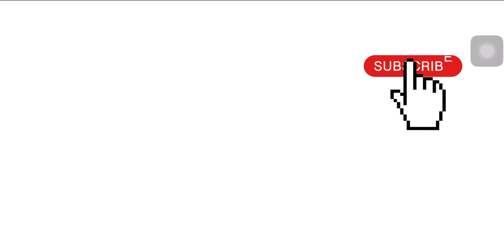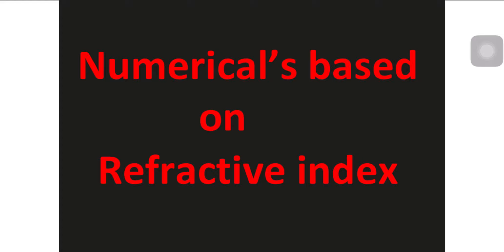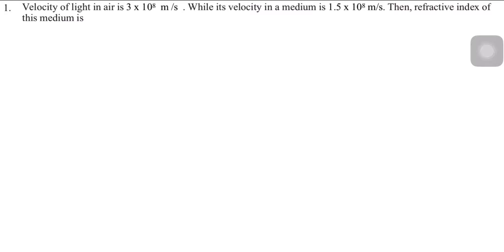Welcome to today's lecture, which is basically about the numericals on refractive index — absolute refractive index and relative refractive index. I have selected a few questions from the topic, and I hope that it will help you in solving these simple type of numericals. Let's begin. Our first question is: velocity of light in air is 3×10⁸ m/s, while its velocity in a medium is 1.5×10⁸ m/s. Find the refractive index of the medium.